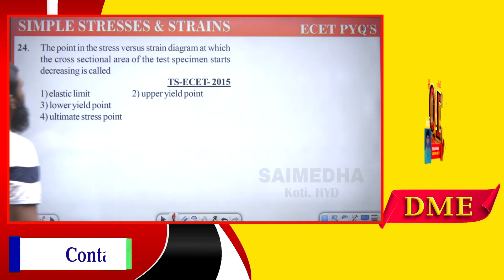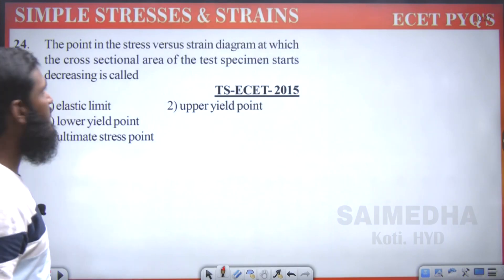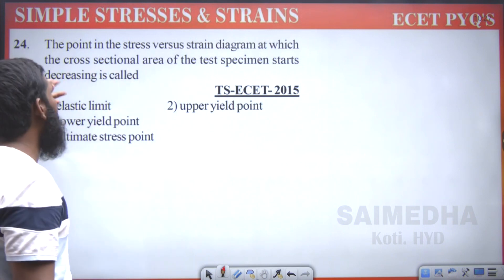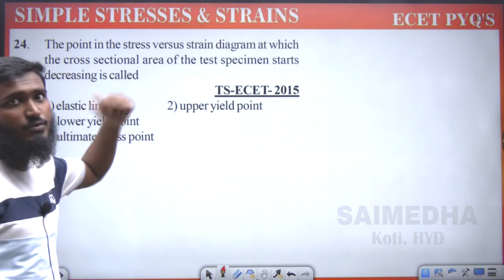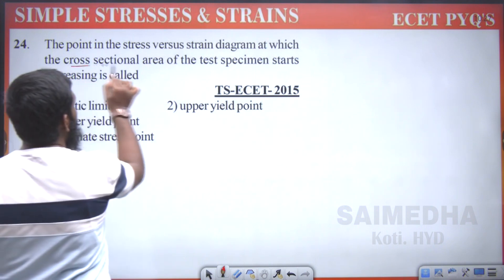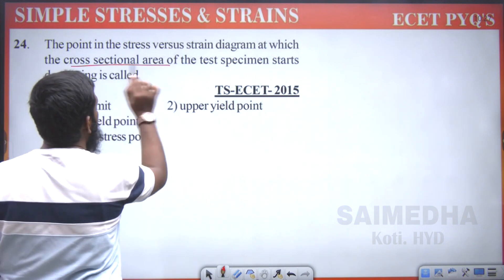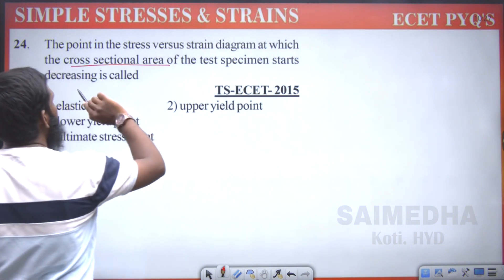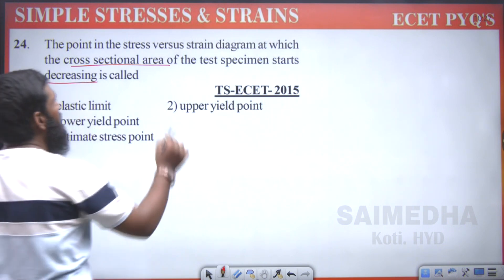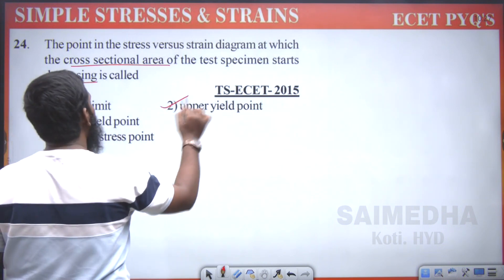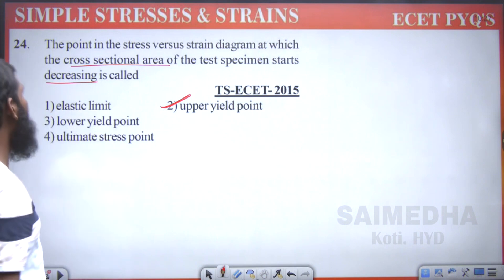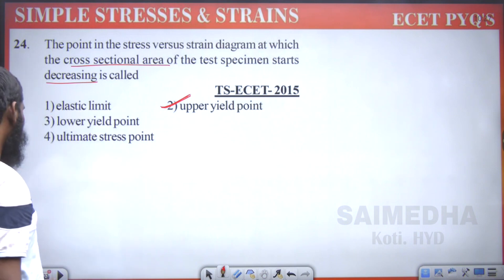Next: in the stress versus strain diagram, it means the cross-sectional area of the test specimen starts decreasing. This question is repeated. Whenever the cross-sectional area of the test specimen starts decreasing, which point are we calling? Upper yield point. Second option is correct.